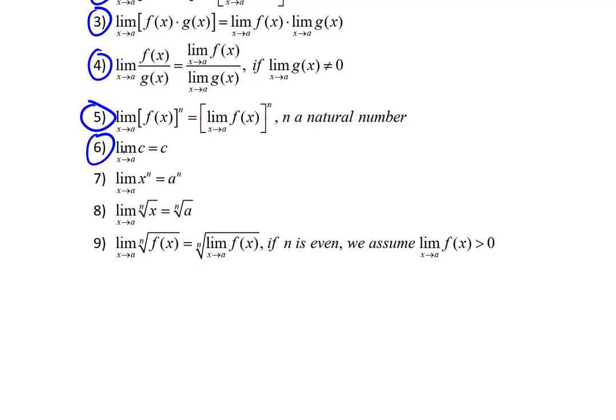Sixthly, we can say that the limit as x approaches a of some constant c is simply that constant c. Seventh, the limit as x approaches a of x to the n is equal to a to the n. Notice that a is the value that x is approaching here, and it turns out that we're just plugging it in for x in this function. In fact, we'll get a lot more of that kind of behavior with limits very shortly here.